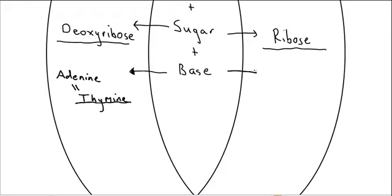In RNA, we also have adenine. But if you recall, it doesn't pair with thymine in RNA. Instead, we have a different base called uracil.